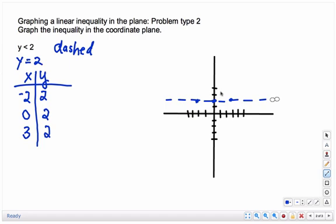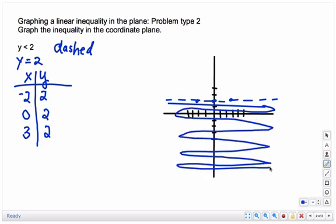Now we need to determine if we shade above or below. So what I want you to remember is, above this line, these y values are bigger. And below the line, the y values are getting smaller. So this is y is less than. Less than is going to be below the line. So you would shade this region below your line.